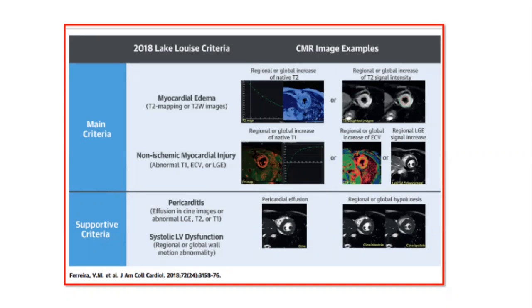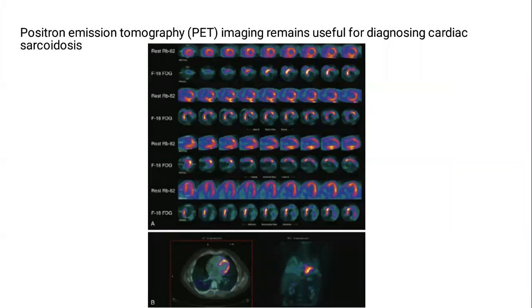In sarcoidosis, PET scan can be used, which is very specific for the diagnosis. We can see a mismatch between myocardial perfusion and the metabolic activity.